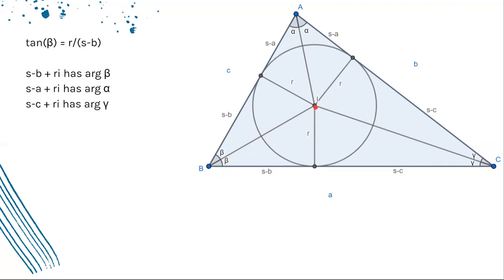By the same reasoning, S - A + Ri has argument alpha, and S - C + Ri has argument gamma. We also know that 2α, 2β, and 2γ are the angles of the big triangle. Remembering that the sum of the angles in a triangle is 180 degrees, we have 2α + 2β + 2γ = 180. Dividing by 2, we get α + β + γ = 90.